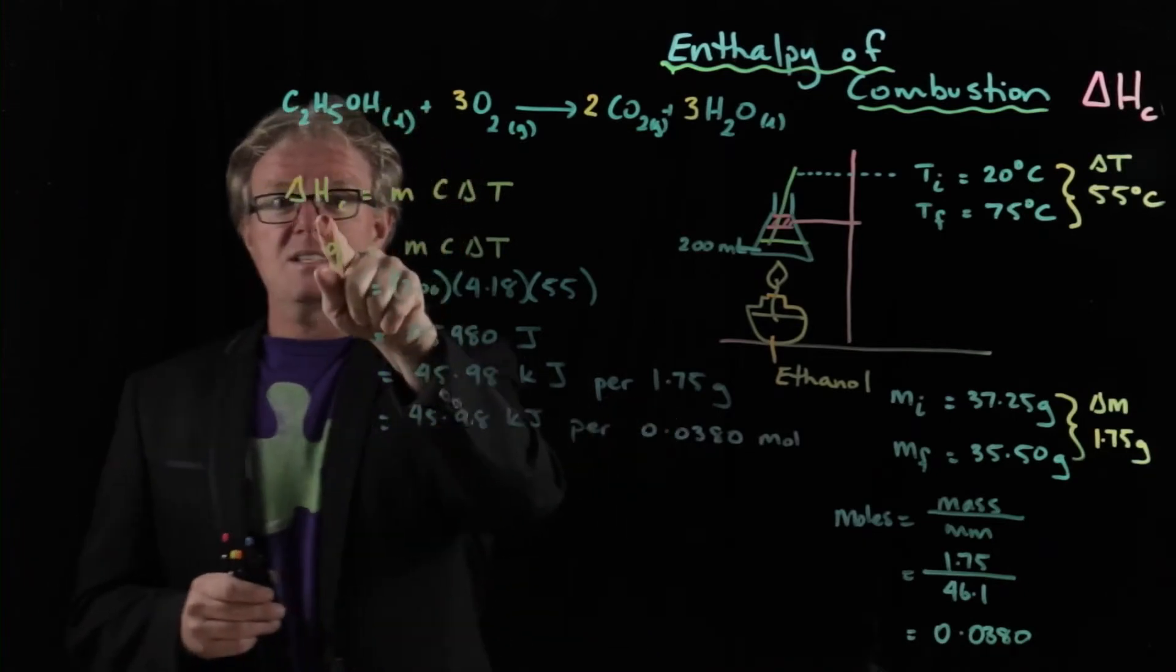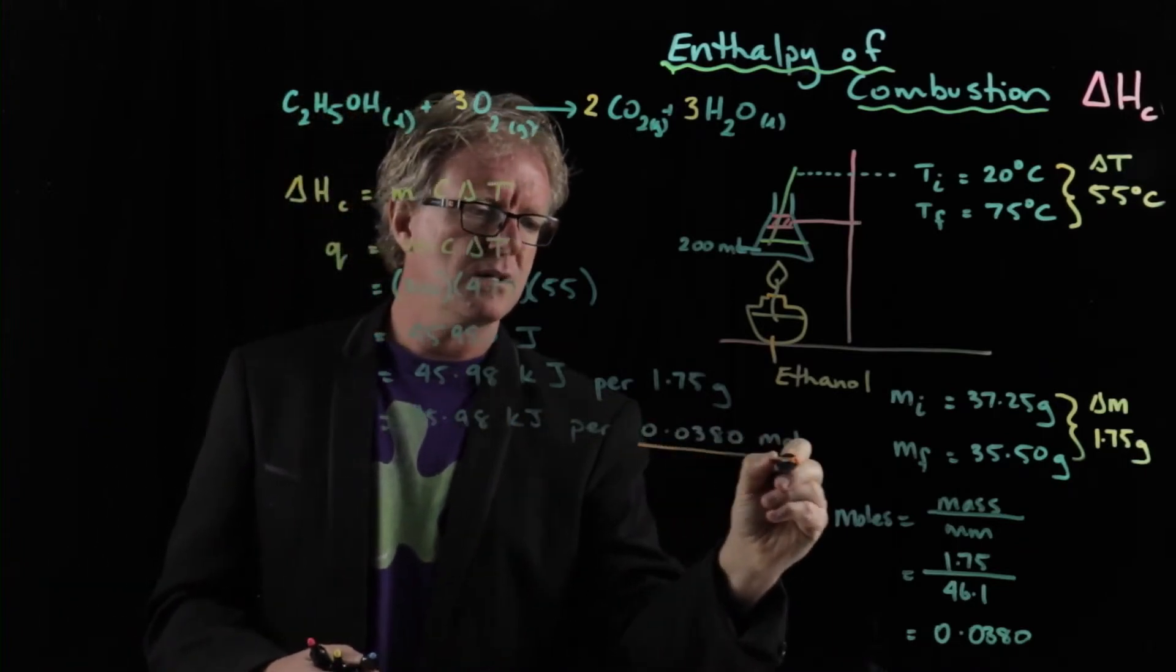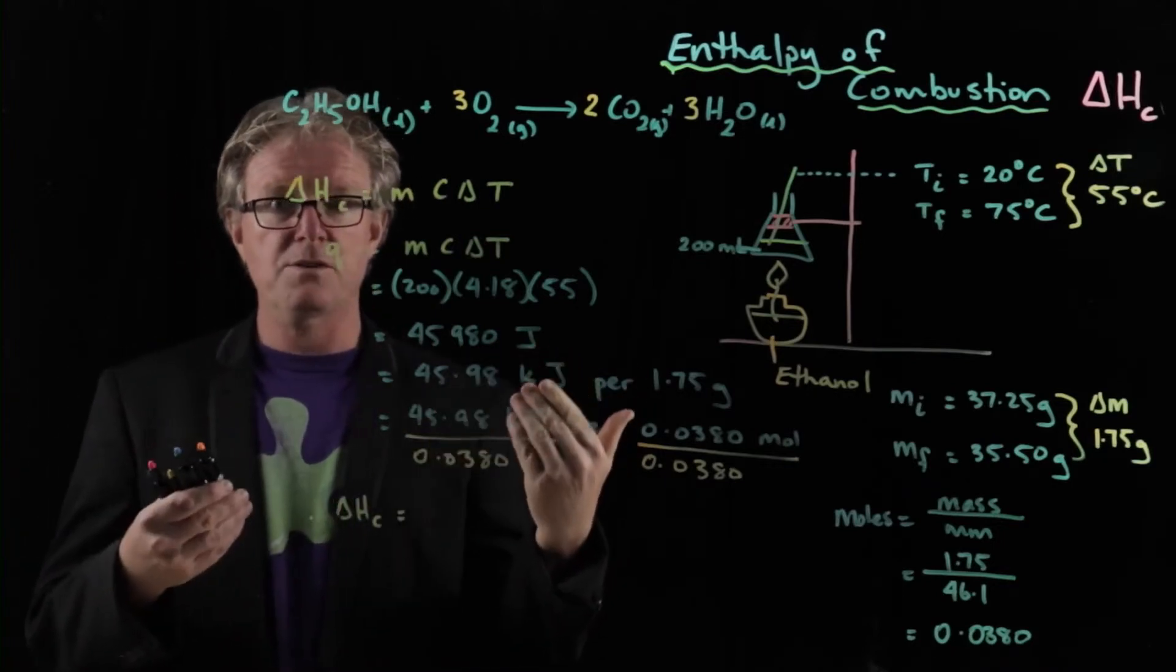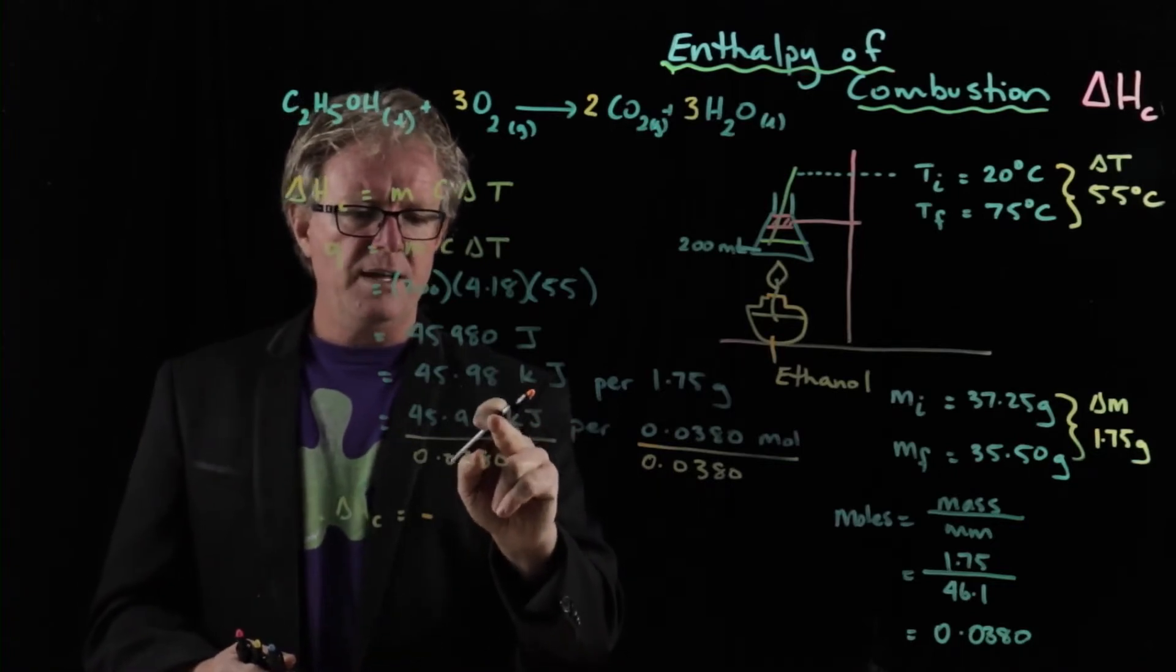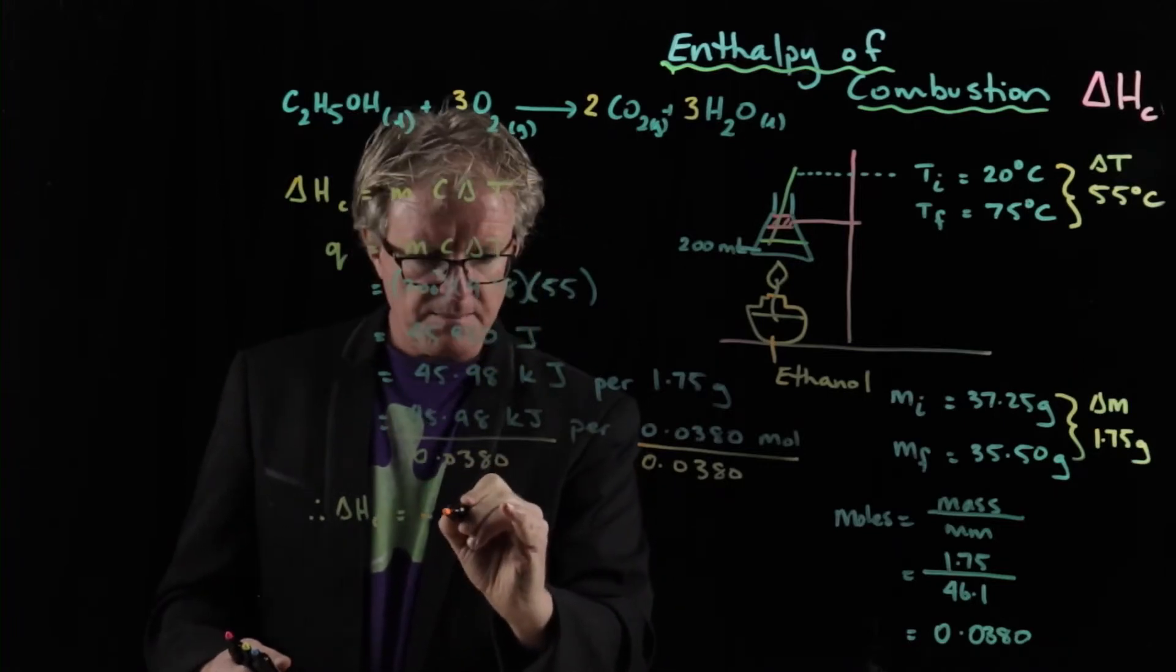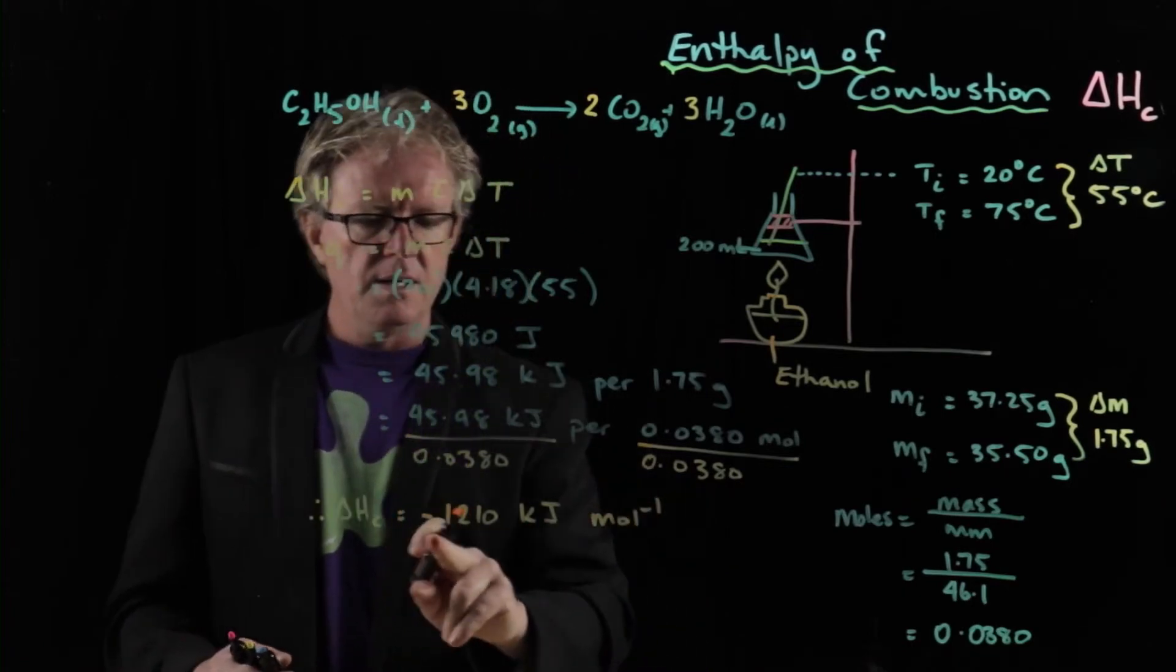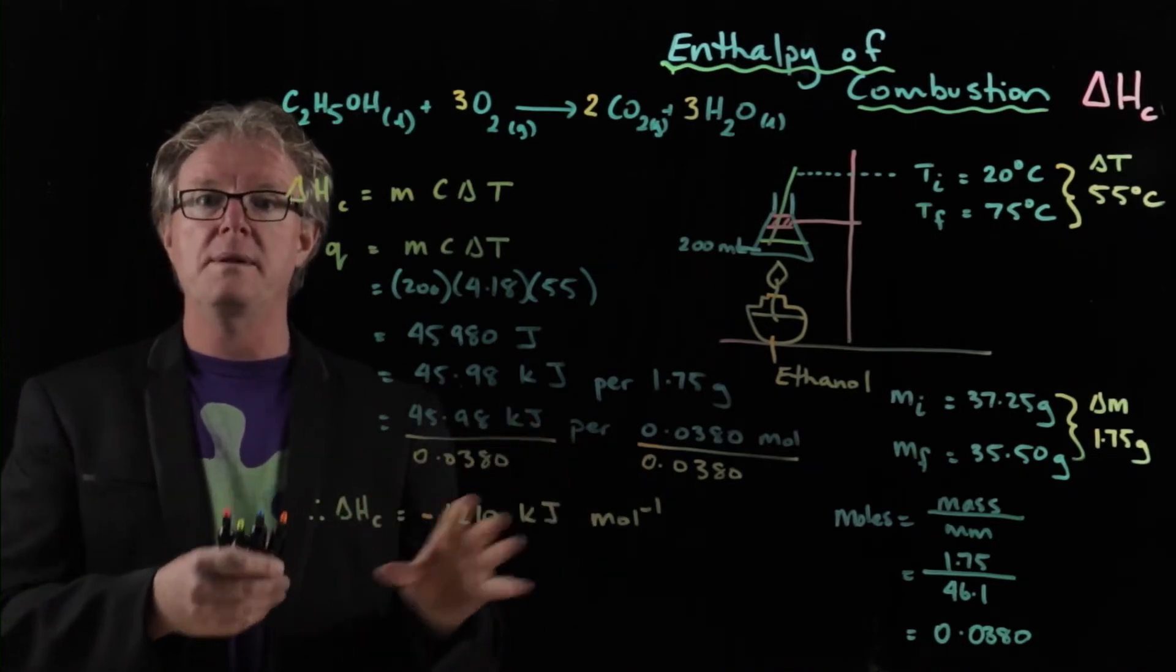So if we write that again, 45.98 kilojoules per 0.0380 moles. Well, remember this is stated as per mole. So if we want that as per mole, we've got to divide both sides by how many moles we've got. Therefore, the enthalpy of combustion that we've calculated, and remember enthalpy is negative, combustion is negative, so we can put a minus there. Then it's that divided by the number of moles, which turns out to be 1,210 kilojoules. And that divided by itself is just 1, so it's per mole. So that is our answer: 1,210 kilojoules per mole from our experimental calculations.